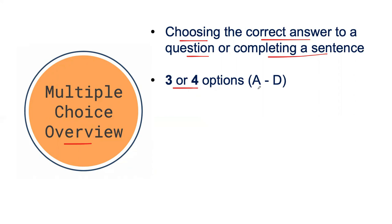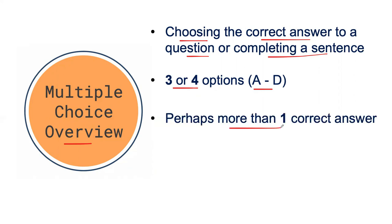Usually these options are in the numbered format, so you may see letters A through D. You'll have either a question or a sentence that is incomplete, and you'll have to choose between these options for the correct answer. In some cases, there may be more than one correct answer. It's quite typical just to have one correct answer, but don't be surprised if you come across a multiple choice question that has more than one. Just make sure you read your directions well and know what to look out for.